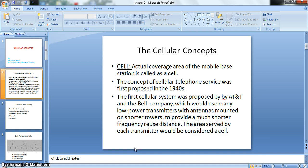The concept of cellular telephone service was first proposed in 1940. A cellular concept would provide a method by which frequency reuse could be maximized, thus multiplying the number of available channels in a particular geographical location. The first proposed system was proposed by AT&T and Bell Company, which would use many lower power transmitters with antennas mounted on shorter towers to provide much shorter frequency reuse distance. The area served by each transmitter would be considered a cell.